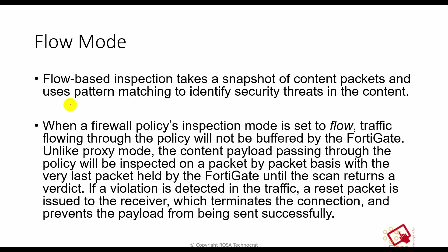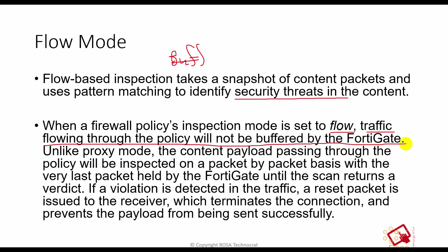Flow-based inspection takes a snapshot of the content packet and uses pattern matching to identify security threats. In flow-based mode, it takes a snapshot of the content but does not hold the packet — it simply forwards it to the destination server. When a firewall policy inspection mode is set to flow, traffic flowing through the policy will not be buffered by the FortiGate.